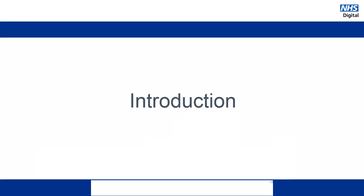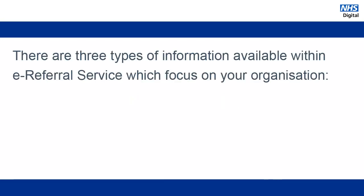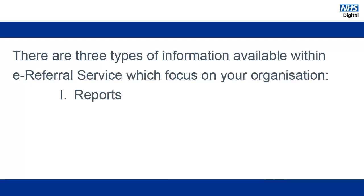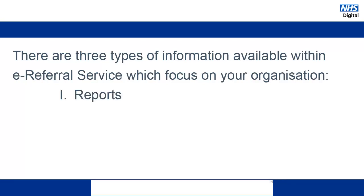This video demonstration will give you a brief overview of the information that you can extract about your organisation from the e-referral service application. There are three types of information available to you within ERS itself. These are predefined data extracts that you can download in an Excel format. They are easy to use and fairly self-explanatory. Information on reports can be found in Part 2 of this video library.